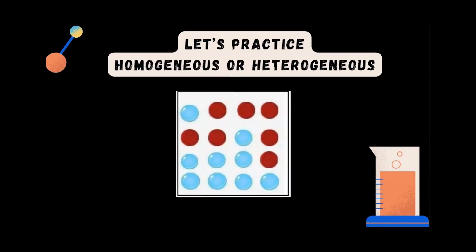Are these particles homogeneous or heterogeneous? They are heterogeneous. As you can see, they are not uniformly distributed — we have big chunks of each type in different places.